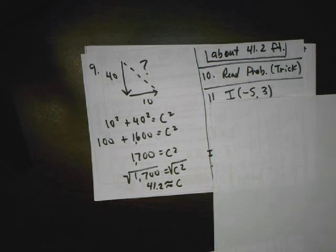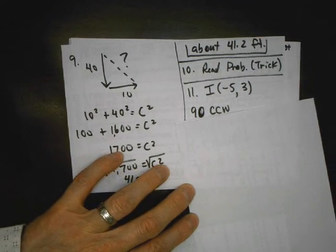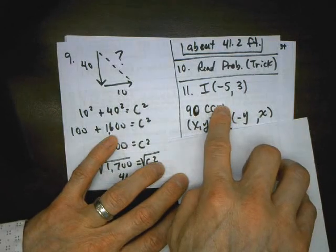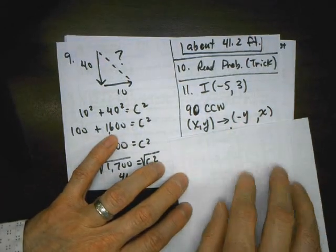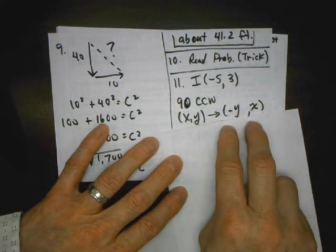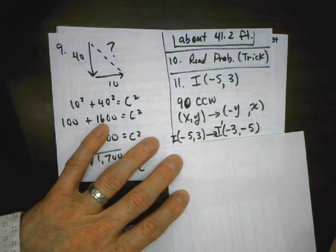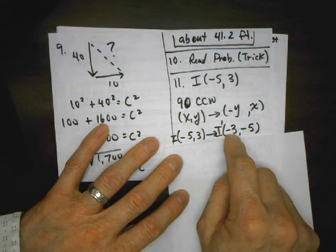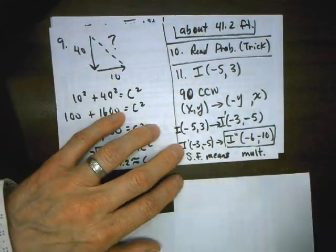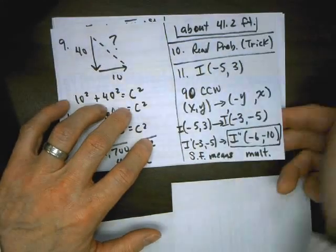So for the first transformation, we have a 90 degree counterclockwise rotation, and we need to memorize those rules. Memorize 90, memorize 270, memorize 180, because you don't know exactly which one I'm going to give you on the test. So the rule for that is switch the two coordinates and change the sign for the first, because remember, we learned that first. And then from here, now we're at I prime. So after this, we're going to do a dilation. Dilation with a scale factor of 2 means just multiplying by 2. That's it. I double prime has to be at negative 6, negative 10. Remember, scale factor means multiply.